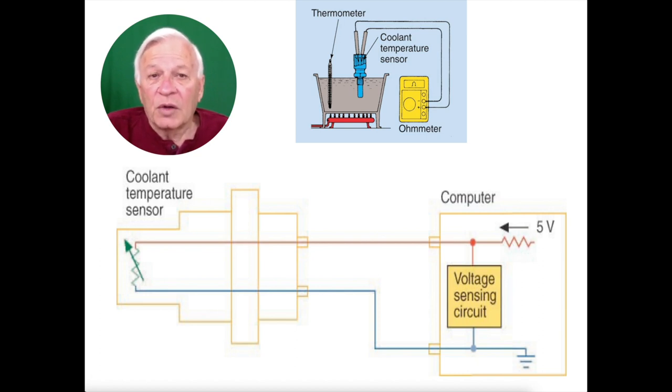Study this diagram. Let's see how it works. It is a coolant temperature sensor, and it is a negative coefficient thermistor, and the resistance goes down as the temperature goes up.